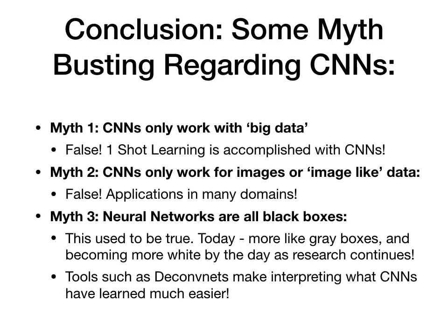The last myth, and maybe one of the most prevalent, is that neural networks are all black boxes. Honestly, this used to be true. Today they're a lot more like gray boxes, and they're becoming more and more white by the day as research continues — we are getting better and better at understanding what neural networks have learned. Those images I was showing on the previous slides, where we're looking at what the network is paying attention to, are produced using something called a deconv net. This approach lets us probe into a network and actually see what it's learned visually. Tools such as these have been developed over time, making interpreting what convolutional neural networks have learned a whole lot easier. These convolutional neural networks really aren't so black boxy anymore — we can actually understand them.